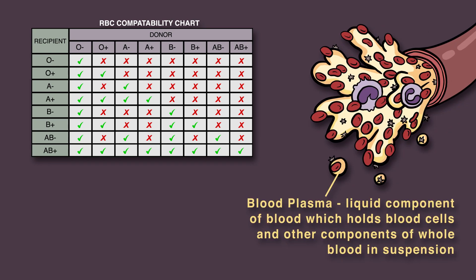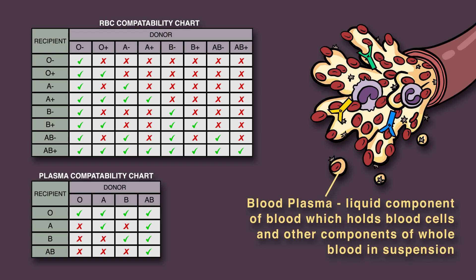Blood plasma is the liquid component of blood which holds blood cells and other constituents of whole blood in suspension. This is where you find A, B, or anti-D antibodies. Hence, plasma compatibility is the inverse of red blood cell compatibility. Someone with blood type O can receive plasma from any blood type, while someone with blood type AB can only receive plasma from other people with blood type AB. Someone with blood type O can only donate plasma to others with blood type O, while those with AB blood can donate plasma to anyone.